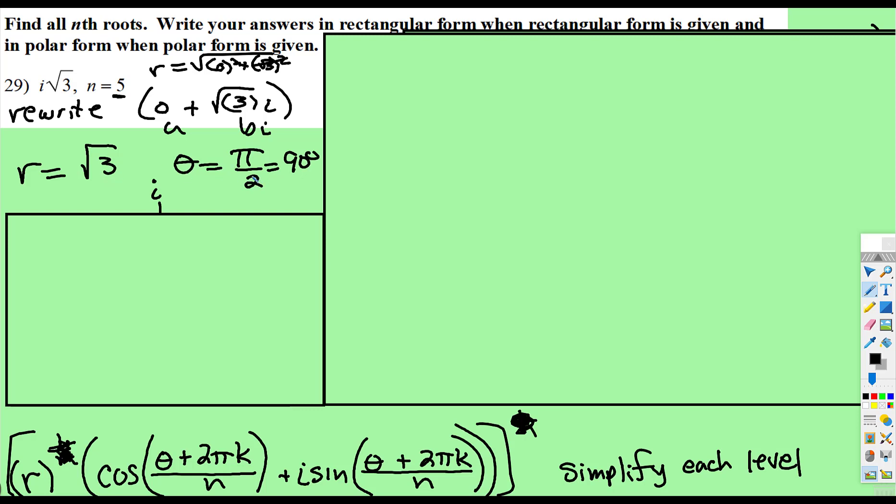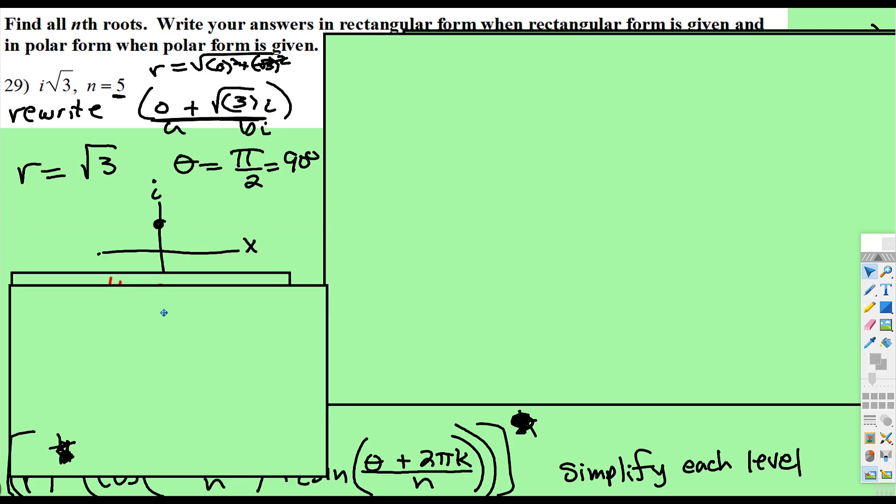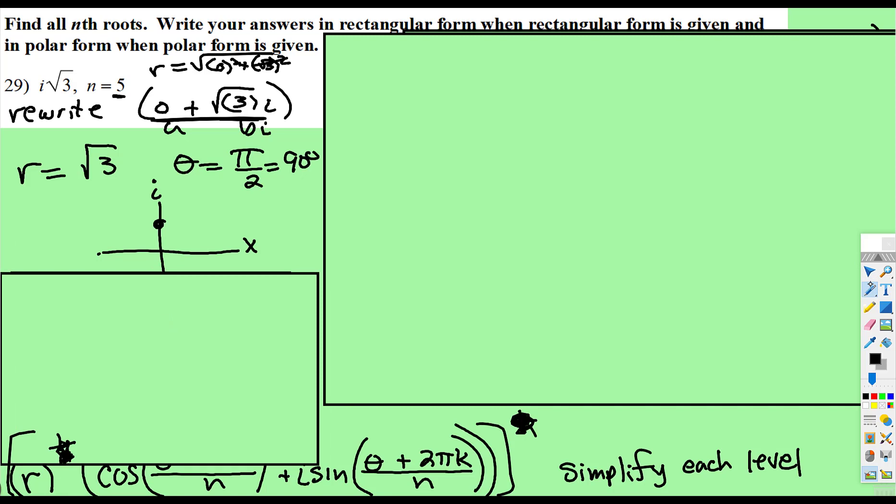And to find the θ, well normally you do the arctangent y over x, but I'm just going to plot this point. And if our a, usually our x, is 0, and our b, usually we think of y, is √3, we just go up √3 height, and that's our point.